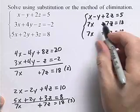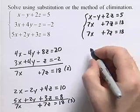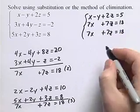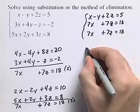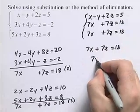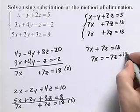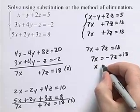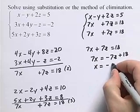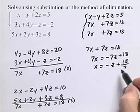We're going to determine the infinite number of solutions by solving the second equation for x in terms of z. Starting with 7x plus 7z equals 18, we get 7x equals negative 7z plus 18. Dividing both sides by 7, we get x equals negative z plus 18 sevenths. We've now expressed x in terms of z.